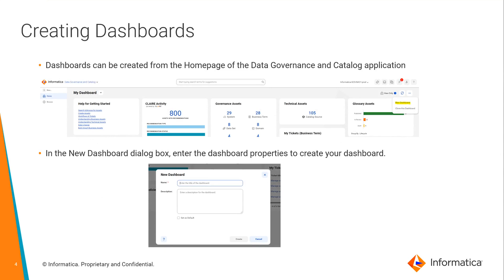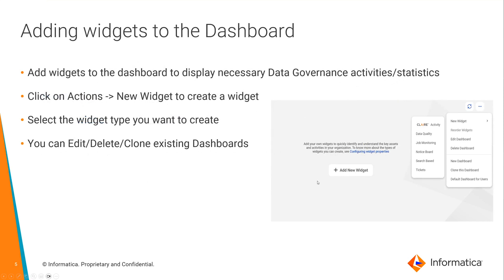To create a dashboard, in the data governance and catalog app from the home page, dashboards can be created using the new dashboard option. Once you select the new dashboard, in the dialog box, enter the name and description of the dashboard, and you do have an option to set this as the default dashboard of the organization. Once a dashboard is created, it is created as an empty template, so it would need to be populated with widgets to add or display necessary data governance activities or statistics.